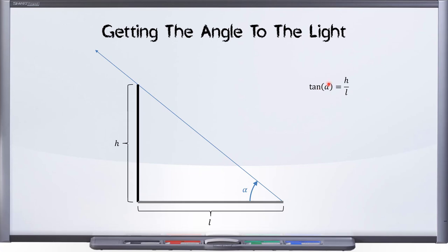And so how do we get the angle? We are given the length of the shadow. We are given the height of the object. The unknown is alpha. So let's get alpha with an arc tangent or inverse tangent.